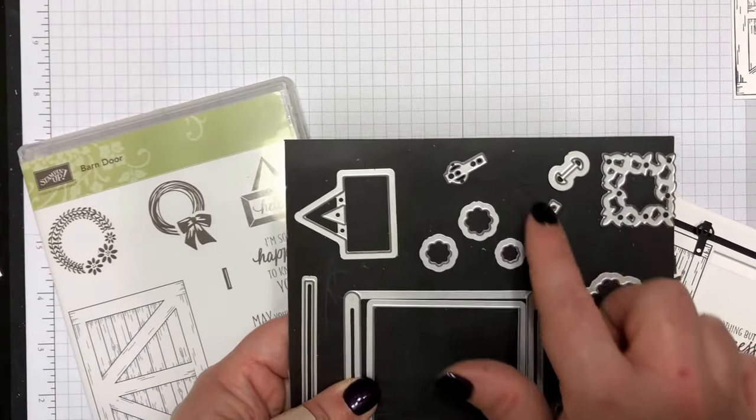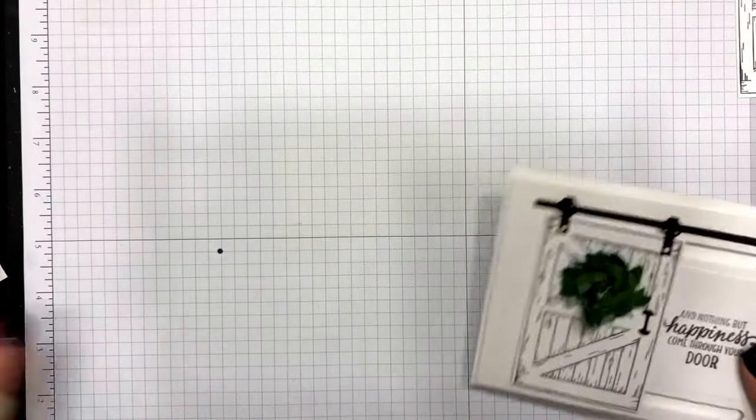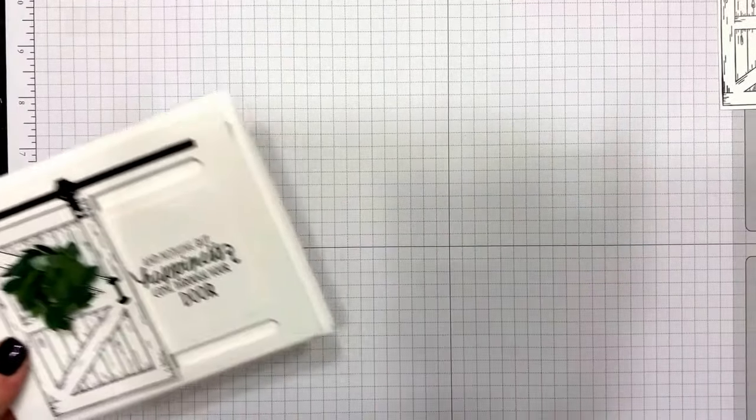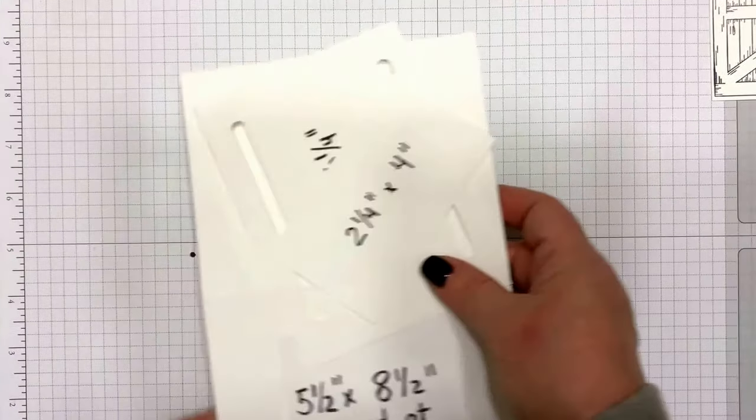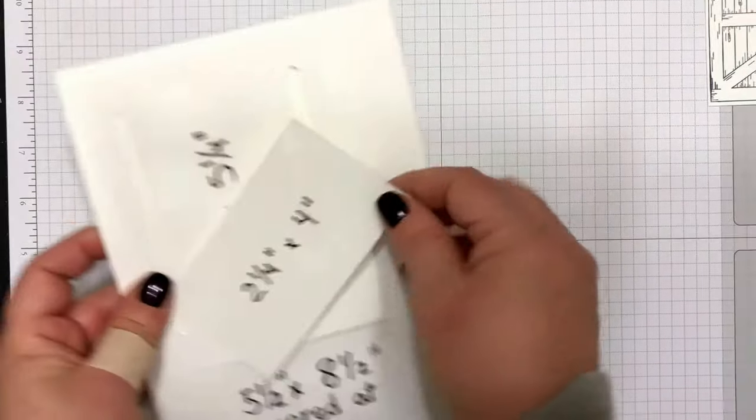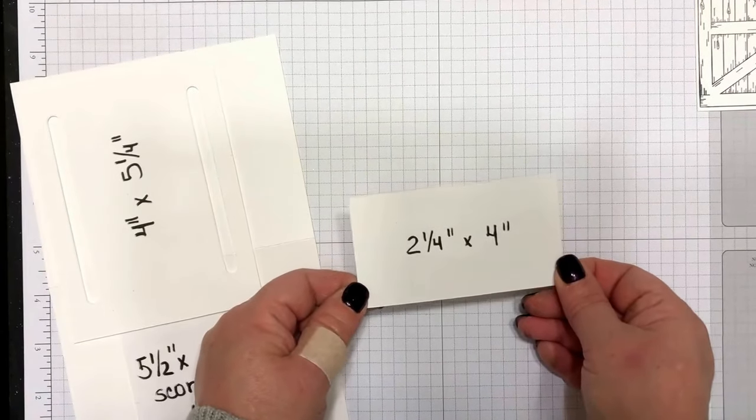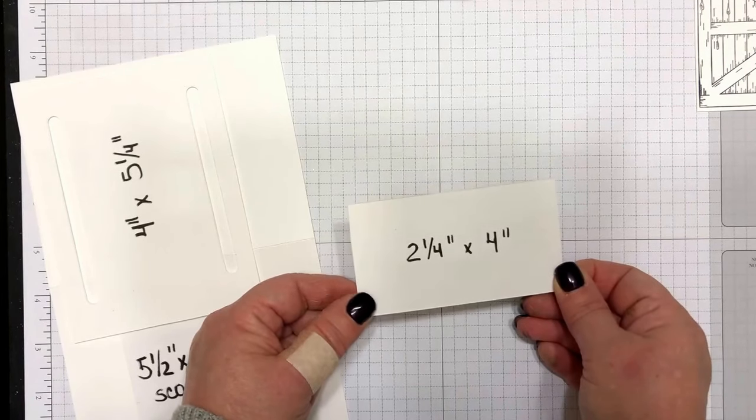So let's get to it. I used whisper white cardstock, and I didn't use our regular whisper white cardstock. I used the thick whisper white cardstock for this card. It just gives it a little bit more heft to make it a little sturdier. You're going to cut one piece at two and a quarter by four inches. This is the piece that you're going to put your greeting on.